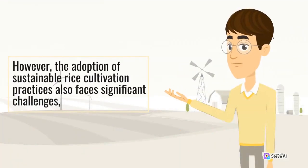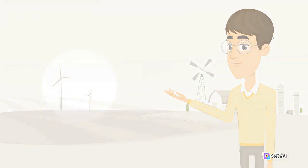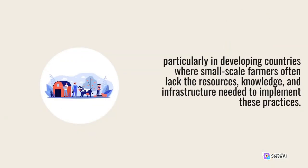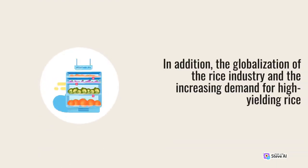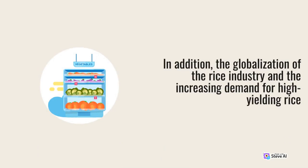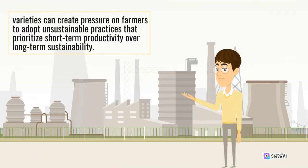However, the adoption of sustainable rice cultivation practices also faces significant challenges. The adoption of sustainable rice cultivation is particularly difficult in developing countries where small-scale farmers often lack the resources, knowledge, and infrastructure needed to implement these practices. In addition, the globalization of the rice industry and the increasing demand for high-yielding rice varieties can create pressure on farmers to adopt unsustainable practices that prioritize short-term productivity over long-term sustainability.